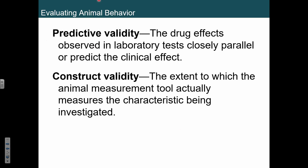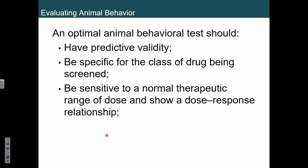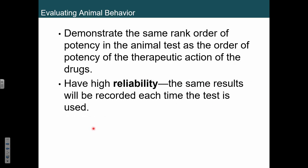Construct validity — we really need to actually measure what we're trying to measure. We want all of these things. We also want a nice dose-response curve when we do tests, and high reliability. You want to get the same results over and over again. If you don't get the same results, you're probably doing something wrong.